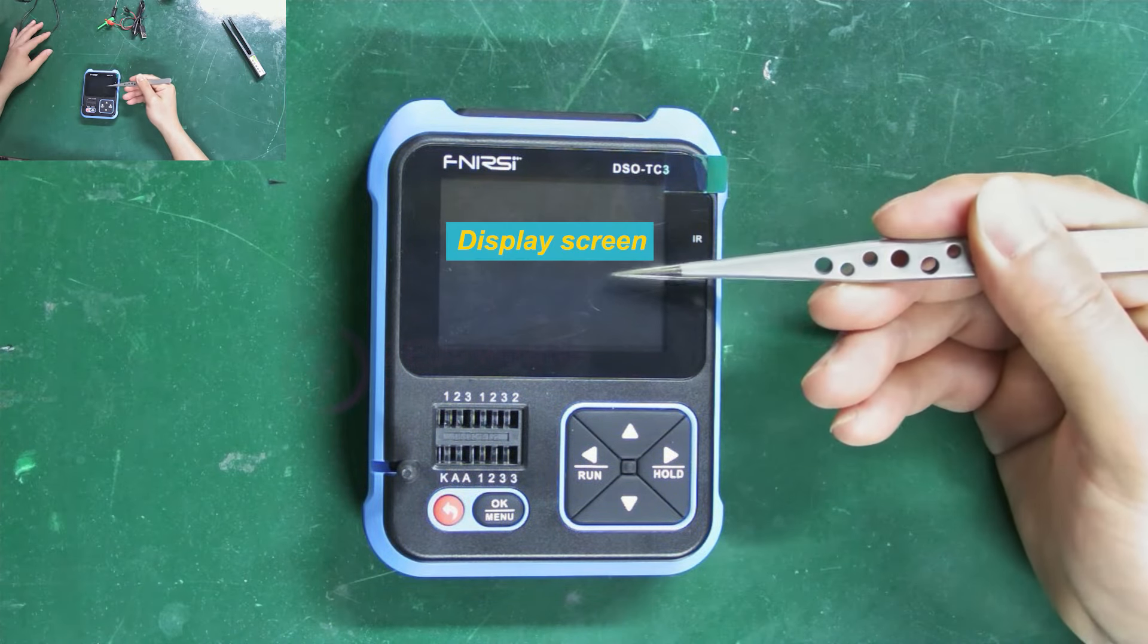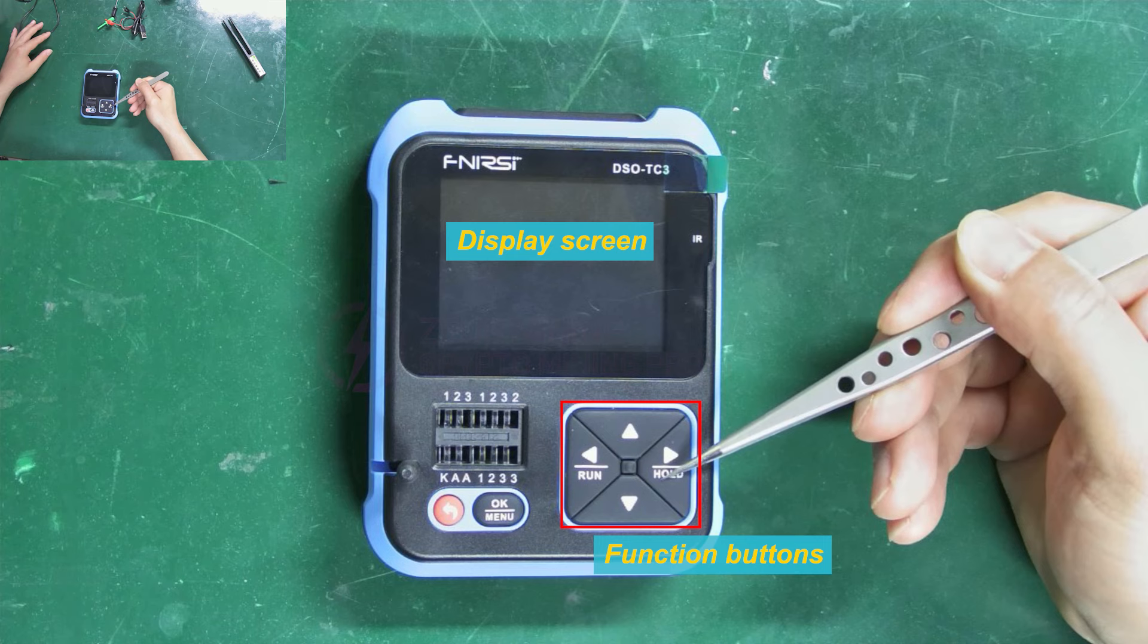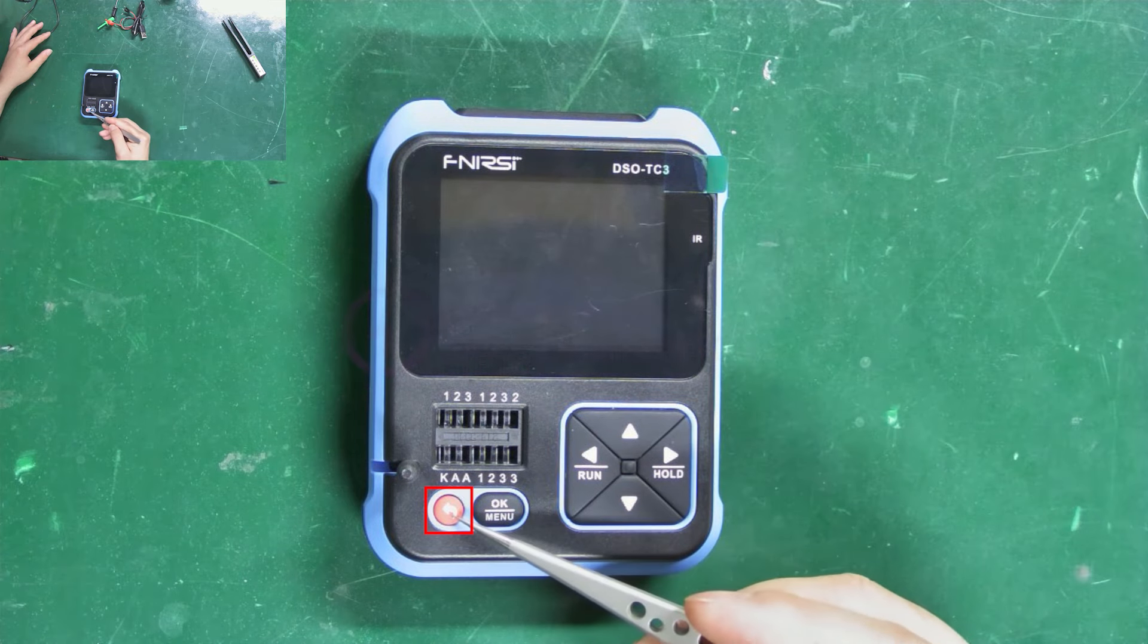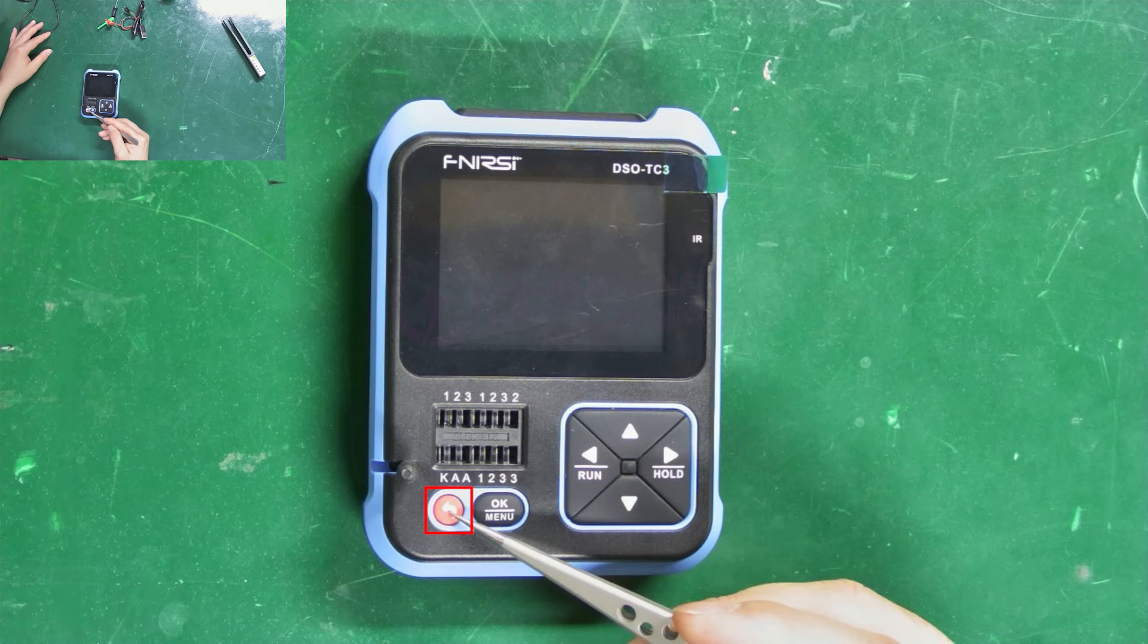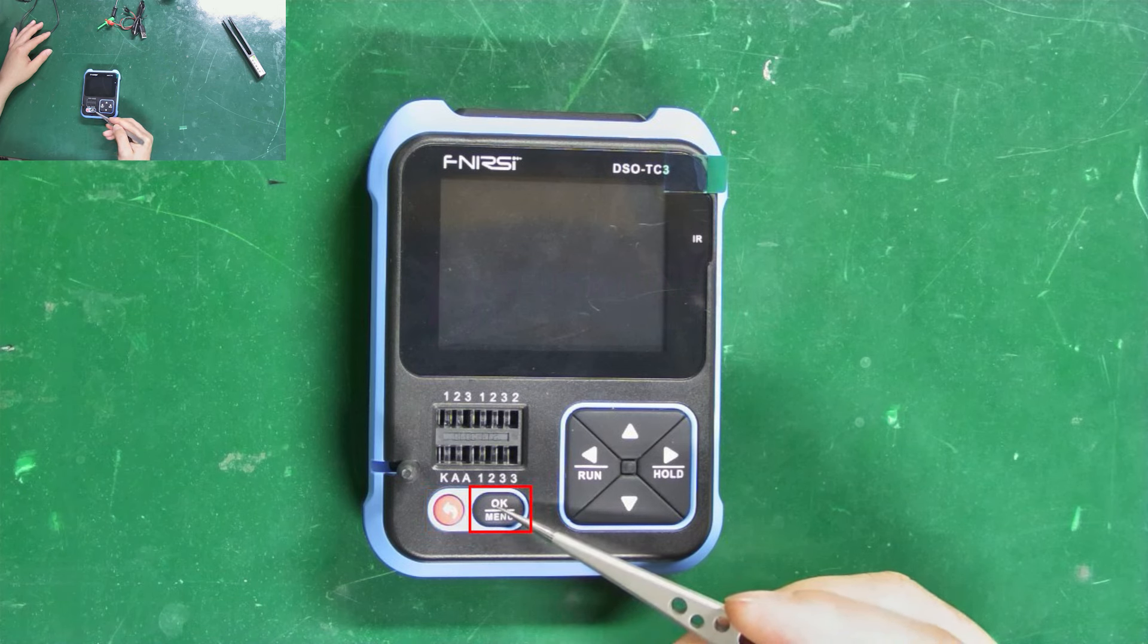This is the display screen. Here are the function buttons. The red button is for power on and return. Press and hold for three seconds to turn on the tester. The black button is the OK and menu button. Press and hold for three seconds to enter language settings.